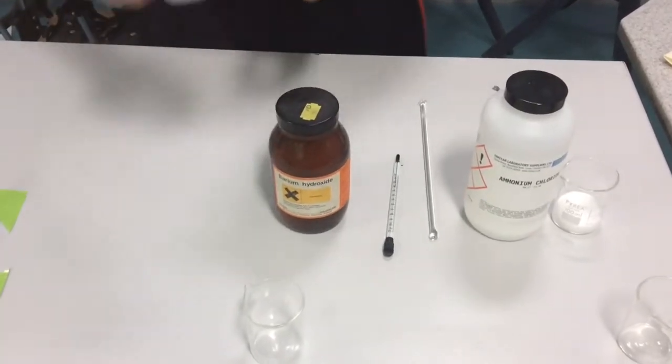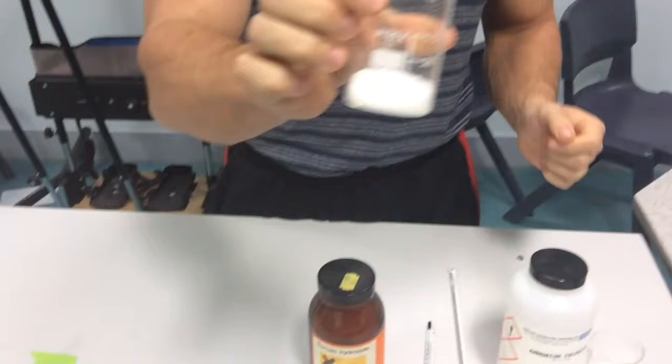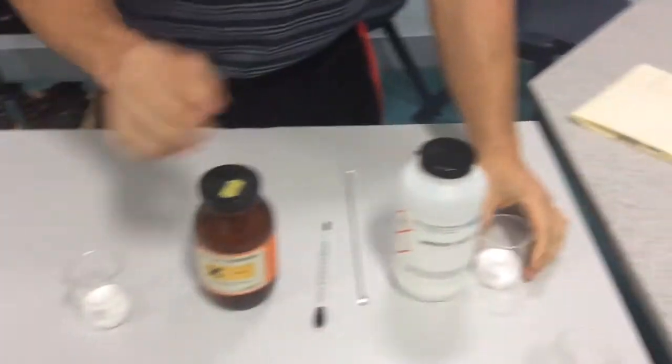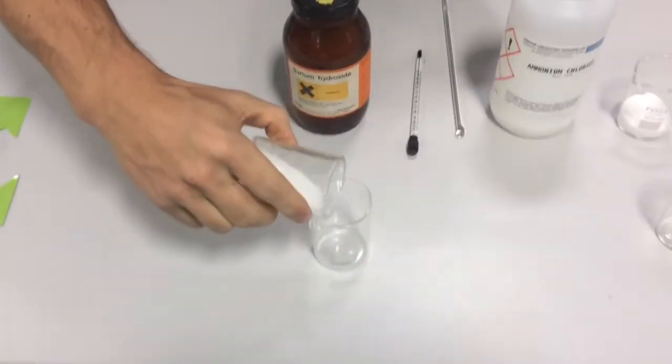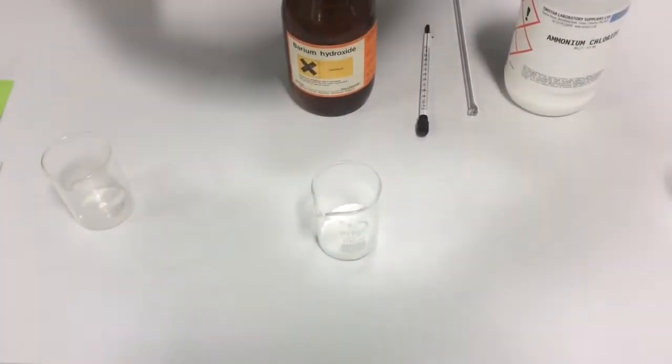Now what I've got here is 25 grams of this chemical and 25 grams of ammonium chloride. What I'm going to do is pop those in there. So put those in there, pop that in there.